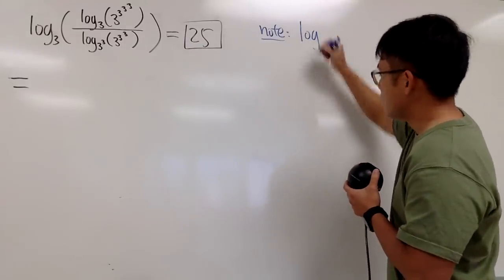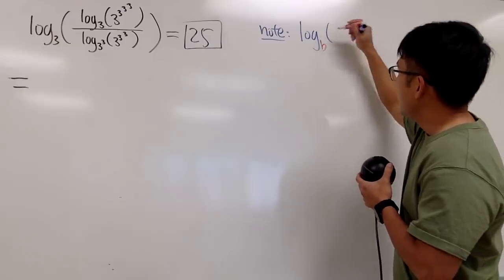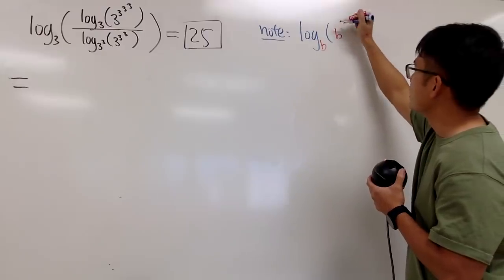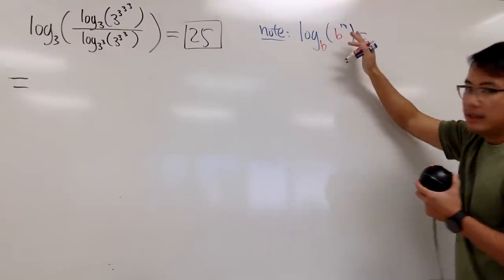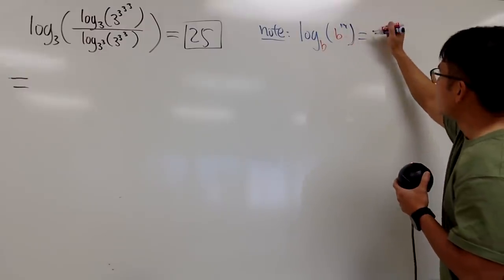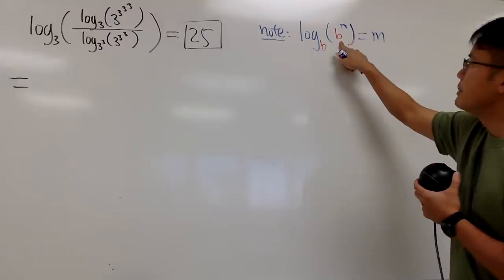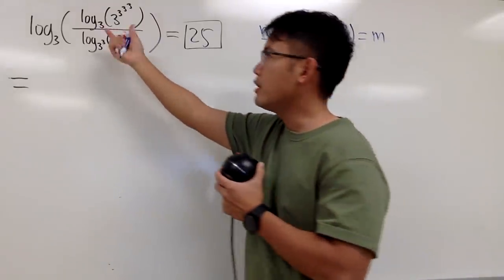First, when you have log and whatever base right here that you have, and if the input right here is the same base, and if you raise this to an exponent, let's say m, this right here is nicely equal to this power, m, because you can just cancel out log base b and this b right here. So that's exactly what we can use right here inside. Log base 3 can be canceled out with that 3.